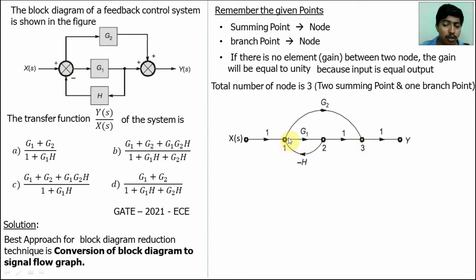In summing point one, one branch incoming from two to one. This gain is G1. This gain is G2. This is negative gain. The value is negative. So minus H. There is no element between the node 2 and 3. So the gain is unity. Similarly, in this input, there is no gain. So the element gain is 1. This is the conversion of block diagram into signal flow graph.